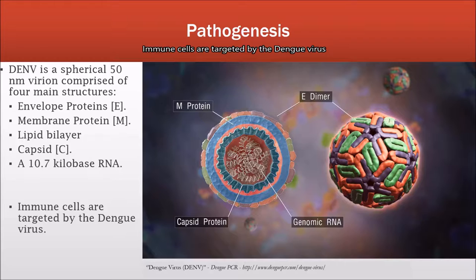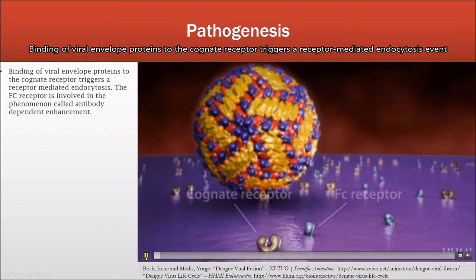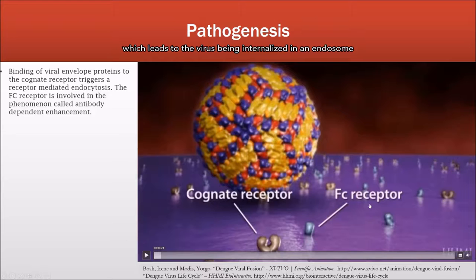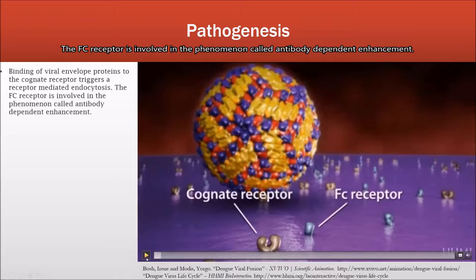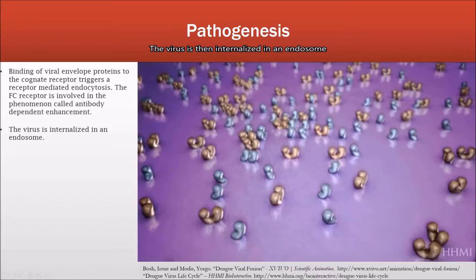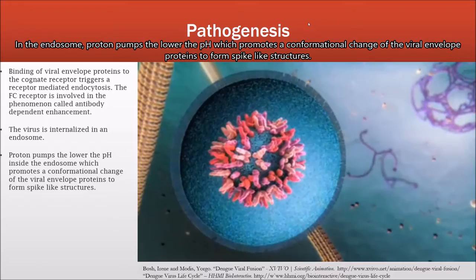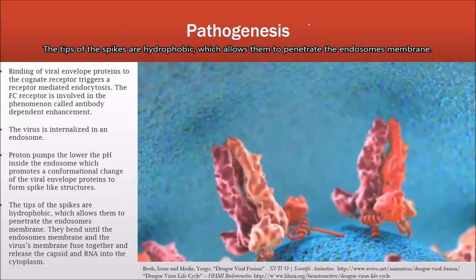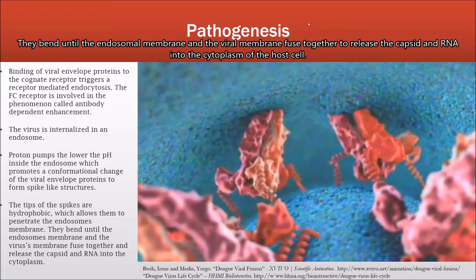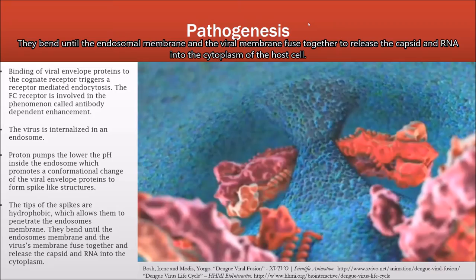Immune cells are targeted by the dengue virus. Binding of the viral envelope proteins to the cognate receptor triggers a receptor-mediated endocytosis event, which leads to the virus being internalized in an endosome. The Fc receptor is involved in a phenomenon called antibody-dependent enhancement. Inside the endosome, proton pumps lower the pH, which promotes a conformational change in the envelope proteins of the virus to form spike-like structures. The tips of the spikes are hydrophobic, which allows them to penetrate the endosome membrane. They bend until the endosome membrane and the viral membrane fuse together to release the capsid and the RNA into the cytoplasm of the host cell.